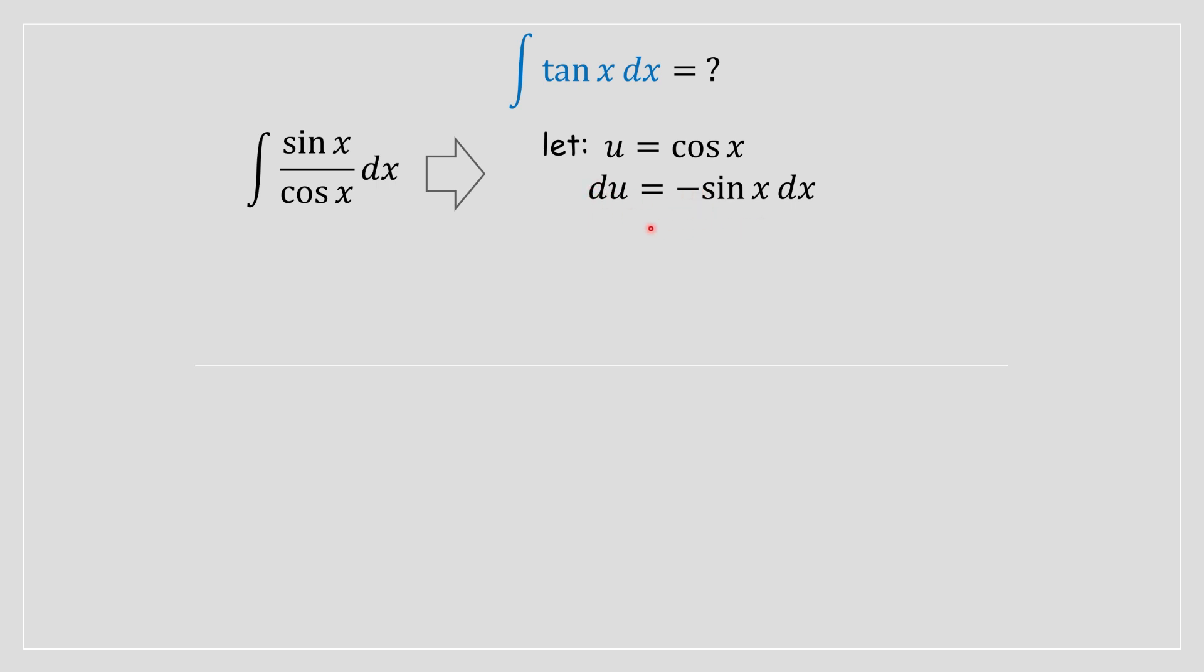So once you have it written in this form, we are then going to solve for dx. We're going to rearrange it to solve for dx. So dx in this case is equal to du divided by negative sine of x. We are going to take this dx and substitute it inside our integral.